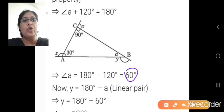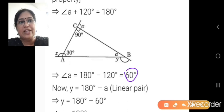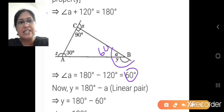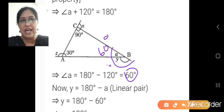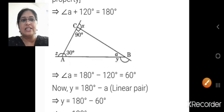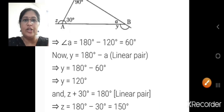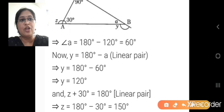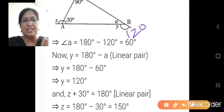Now we want to find the value of y. Since angle A is 60 degrees, the adjacent angle forms a linear pair. So 180 minus 60 equals 120. You get the value of y as 120 degrees.